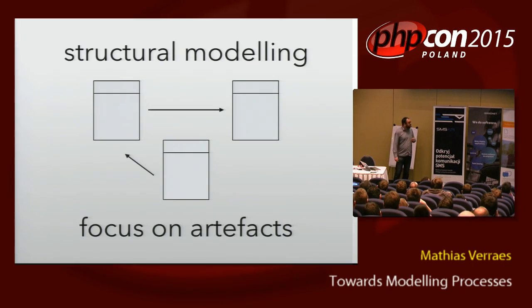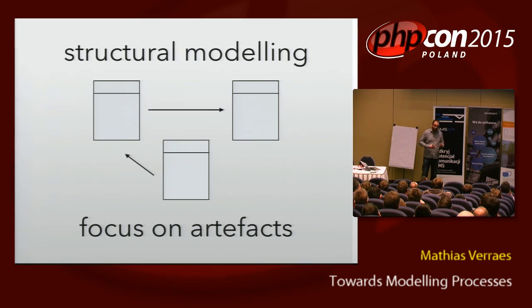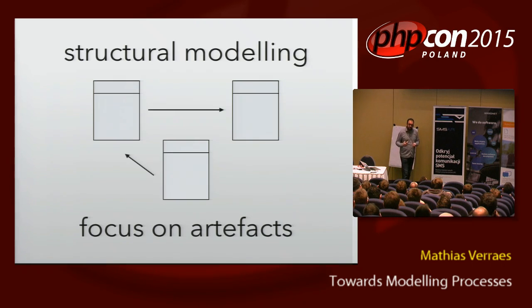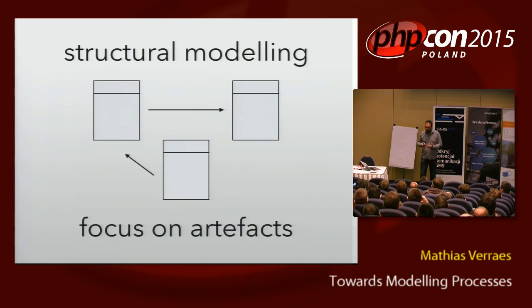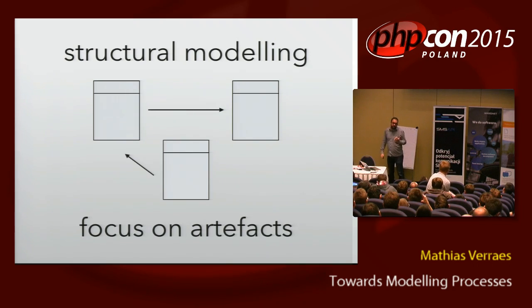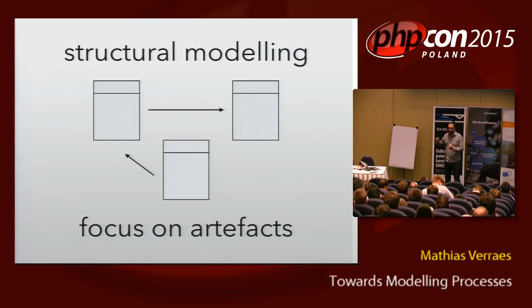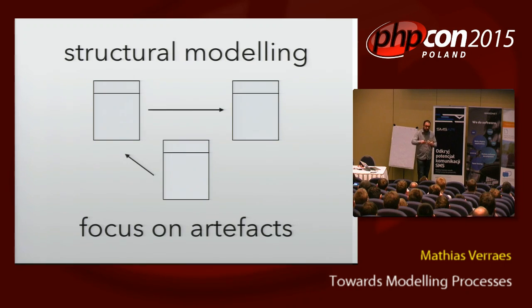This is what we're doing: making structural models — a representation of all the things, all the artifacts in the system. Not only is this an incomplete representation because it doesn't show how the system maintains its structure, how it behaves, or how it changes over time — but this kind of modeling is also scary to non-technical and business people. So it actually hurts communication. If you start doing UML diagrams, you're scaring them away. Whereas the point of modeling should be communication, should be learning about the domain.